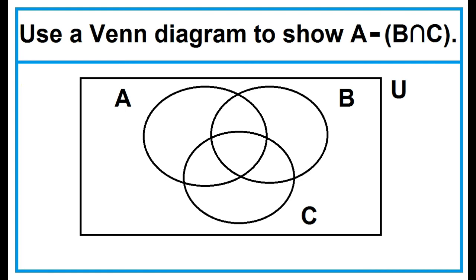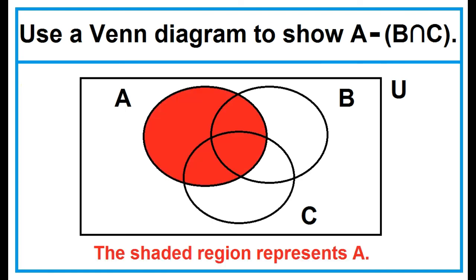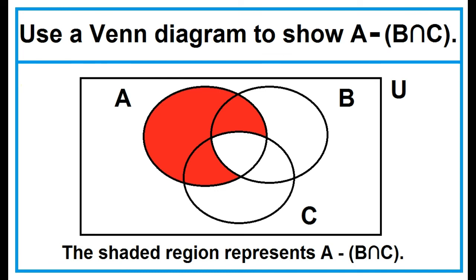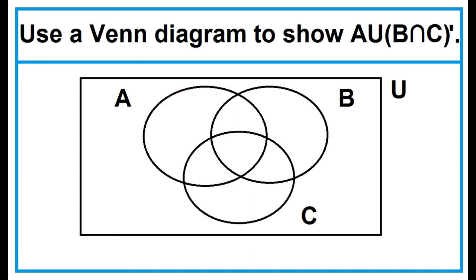Use a Venn diagram to show the difference of A and the quantity B intersection C. The shaded region represents A, and the shaded region represents B intersection C. Subtracting B intersection C from A gives the shaded region representing the difference between A and the intersection B intersection C. Use a Venn diagram to show the union of A and the complement of the quantity B intersection C.